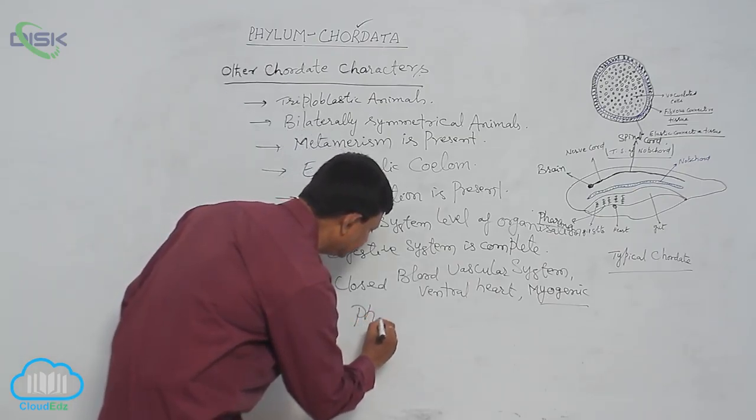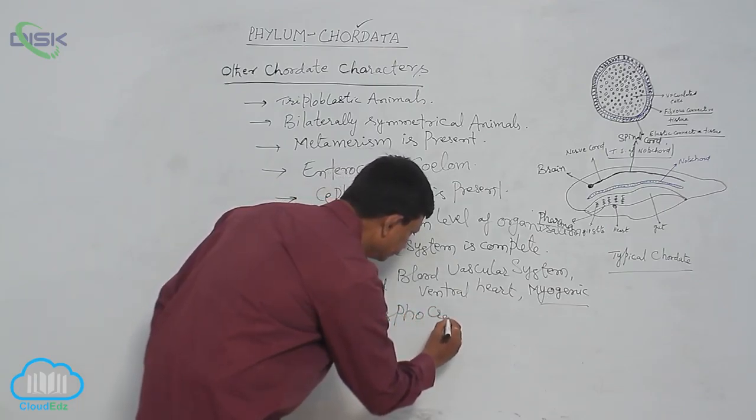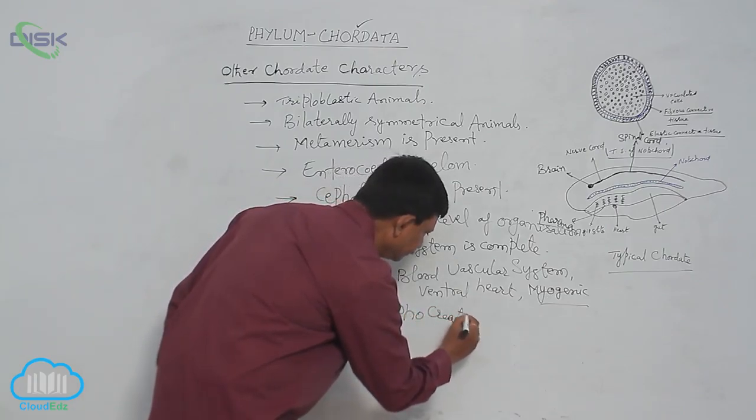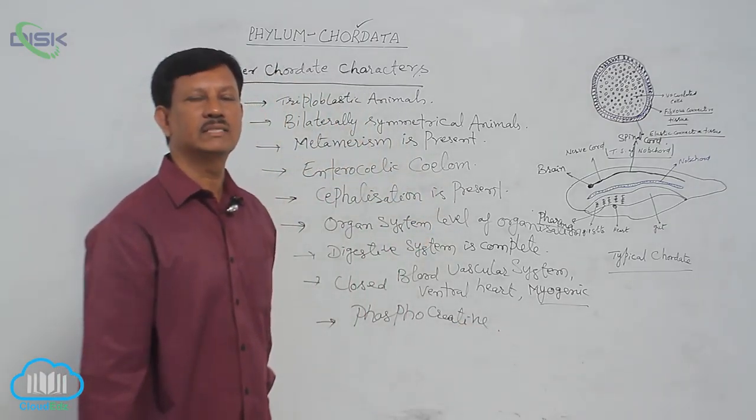Phosphocreatine is found in the muscles of chordates.